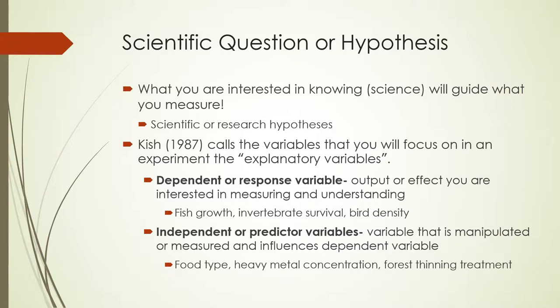So things like food type, heavy metal concentration, forest thinning — all of those factors that could influence the abundance, density, or survival of whatever group you're interested in are your independent or predictor variables: the variables that are either manipulated or measured that you expect may influence the dependent variable.